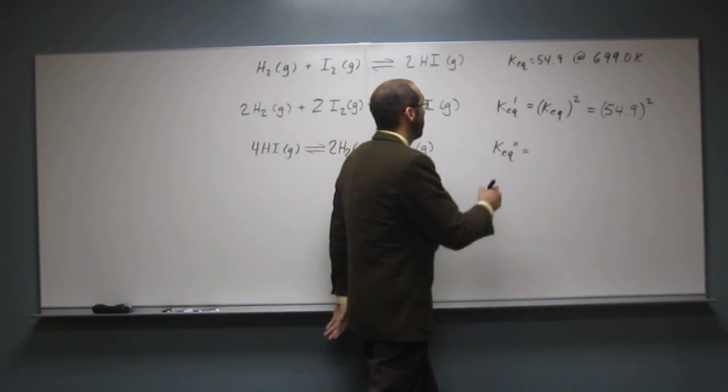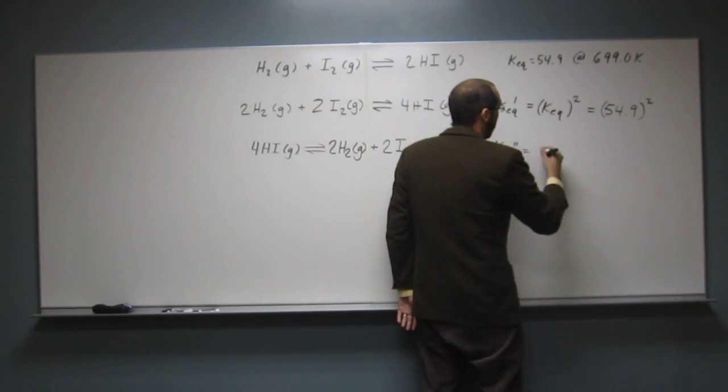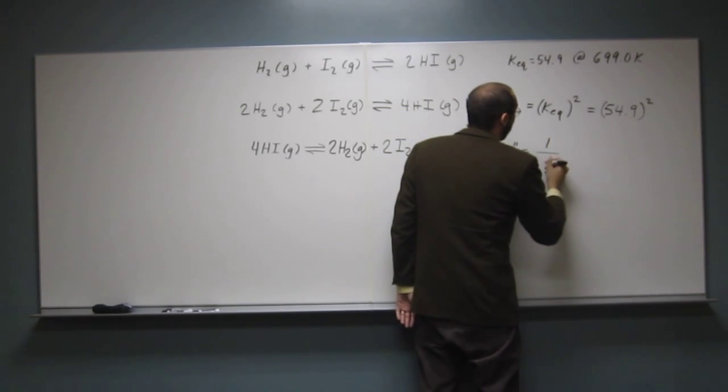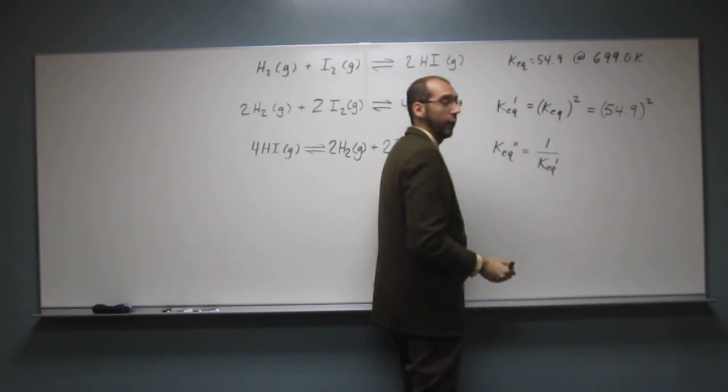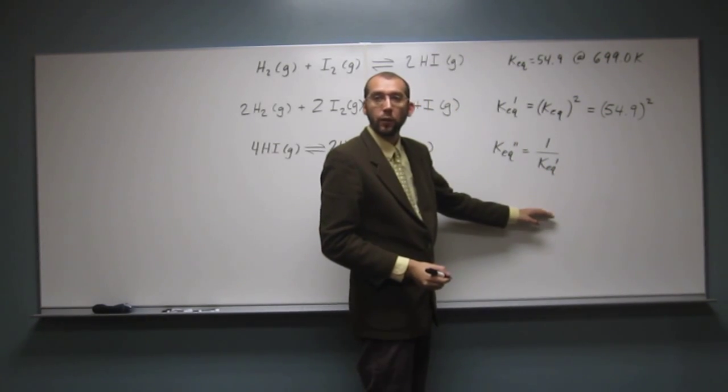So the inverse of that, so in other words, KEQ double prime is going to be 1 over KEQ prime, like that. Is everybody okay with that?